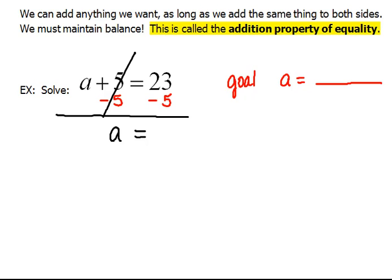the left side, we would only have an a, because the plus 5 and minus 5, those disappeared. They turned into a zero, so we just had an a. And on the right-hand side, 23 minus 5 is 18.